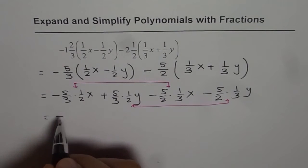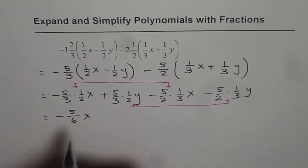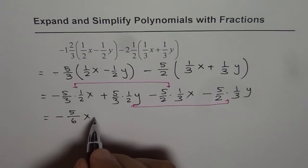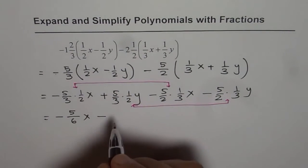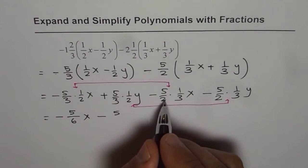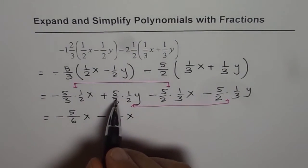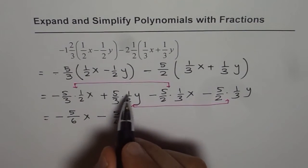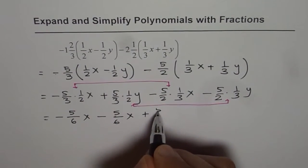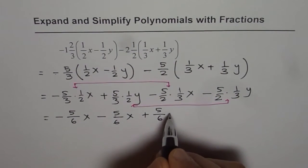So here we have minus 5/6x and this one is minus 5. 5 times 1 and 3 times 2 is 6, 6x. And this term is 5 times 1 is 5, 3 times 2 is 6, y.